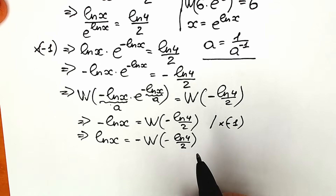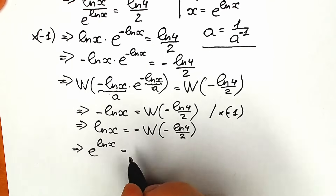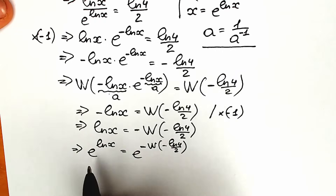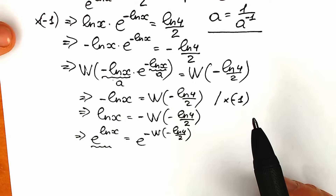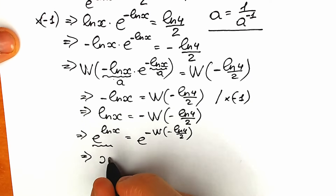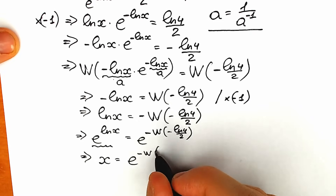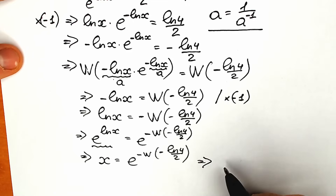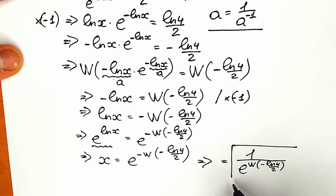Now let's write e as the base on both sides. On the left, e^(ln x) = x. On the right, we have e^(−W(−ln4/2)), which can also be written as 1 / e^(W(−ln4/2)). So our answer for the case x > 0 is: x = e^(−W(−ln4/2)) = 1 / e^(W(−ln4/2)).